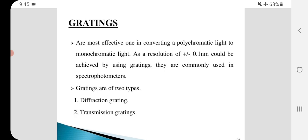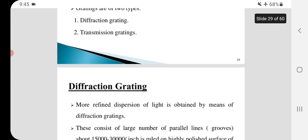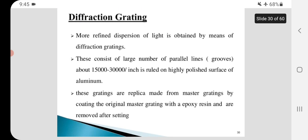Gratings are of two types: diffraction gratings and transmission gratings. Diffraction gratings provide more refined dispersion of light. This consists of a large number of parallel lines about 15,000 to 30,000 per inch ruled on highly polished surface of aluminum.